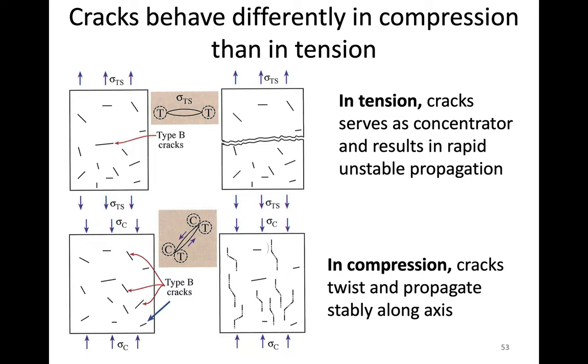The reason flaws matter so much and the way it differs between compression and tension is because of crack propagation. If we have a material—this is a very idealized version—let's say we have this block of material and these slits are our cracks. If you zoom in, you get something that looks more like this when we're applying tensile stress.